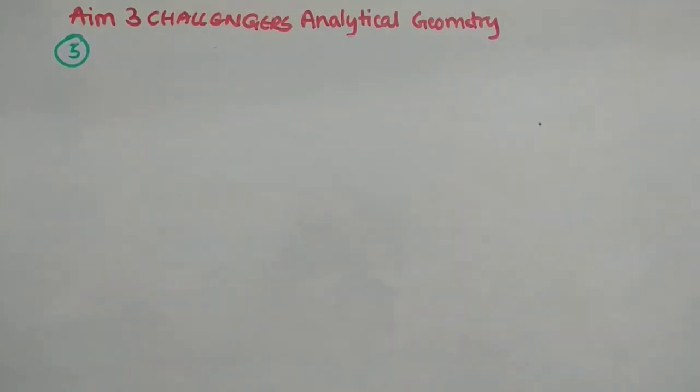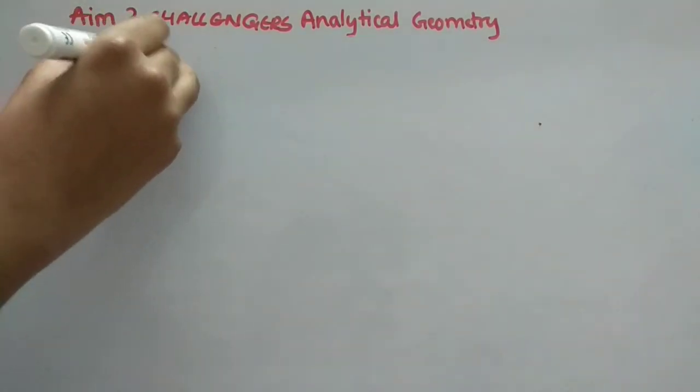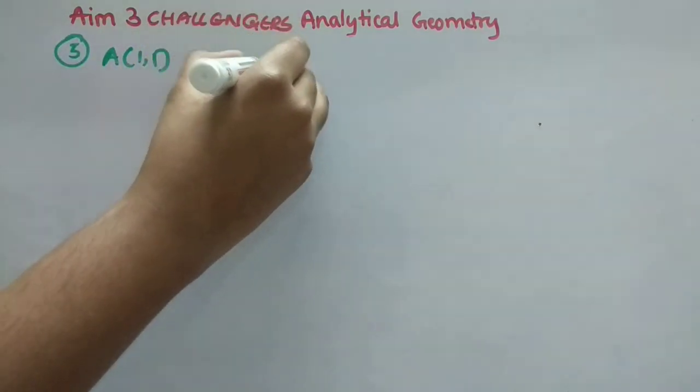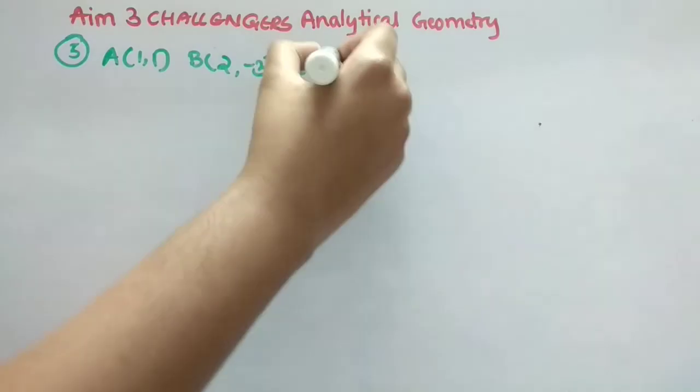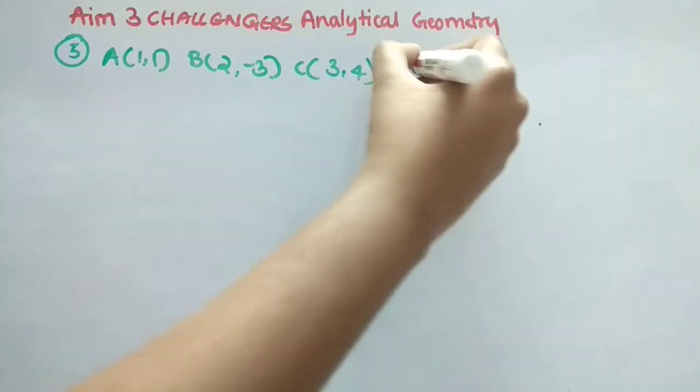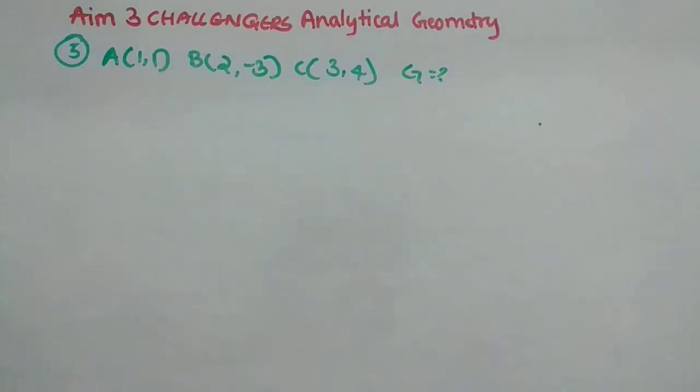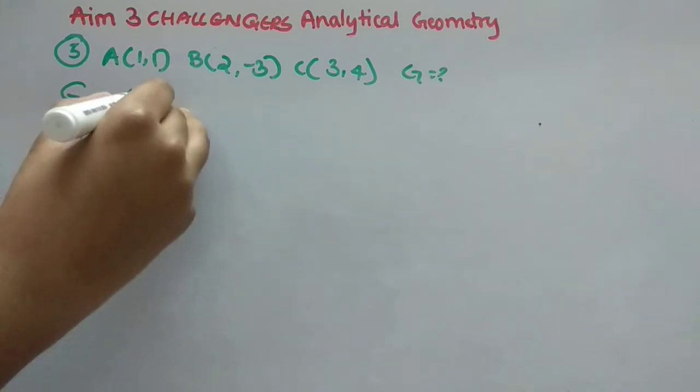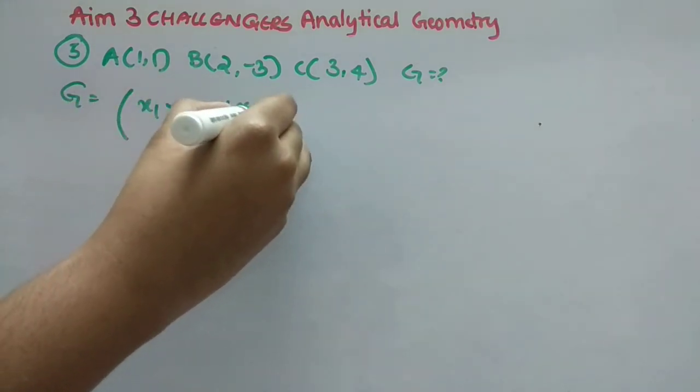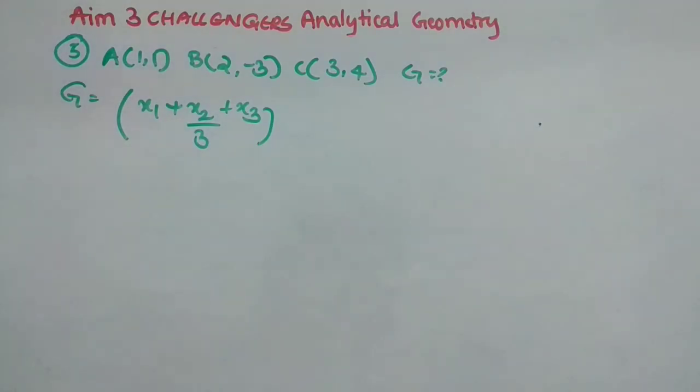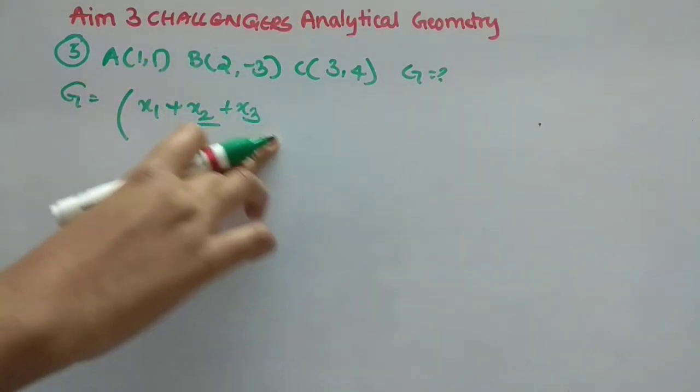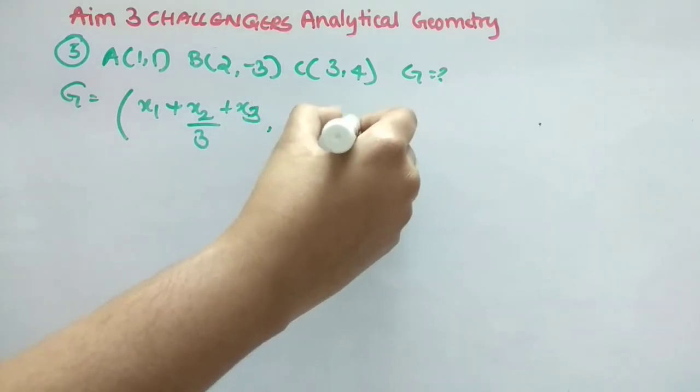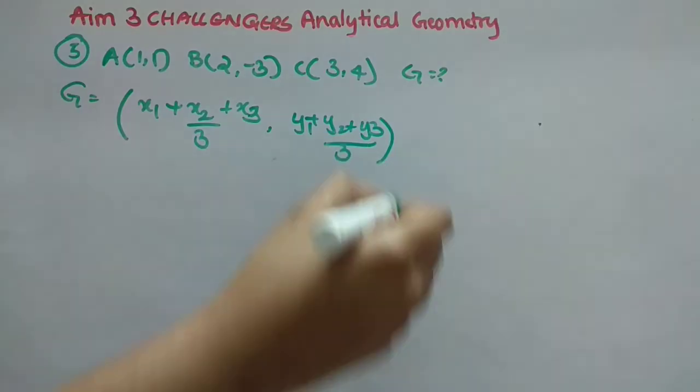Now fifth one. So they have given us three vertices. So what are that? A is 1 comma 1, B is 2 comma minus 3, and C is 3 comma 4. So we have to find centroid for it. So centroid formula we all learnt it earlier only. So I will just put the value. G is equal to x1 plus x2 plus x3 by 3, and comma, I forgot, the remaining some more is there, y1 plus y2 plus y3 by 3.